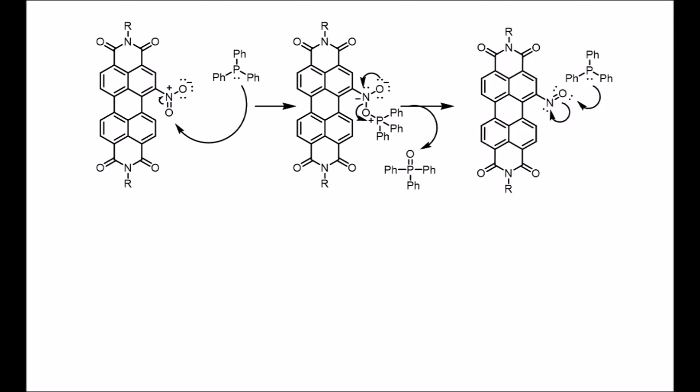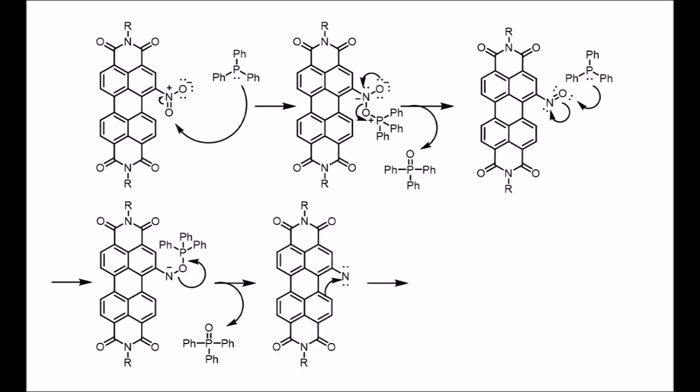Next, a second equivalent of triphenylphosphine attacks the other oxygen and is kicked off in a similar manner to form the intermediate nitrene. The nitrene is highly electrophilic and undergoes electrophilic aromatic substitution to give the de-aromatized intermediate.